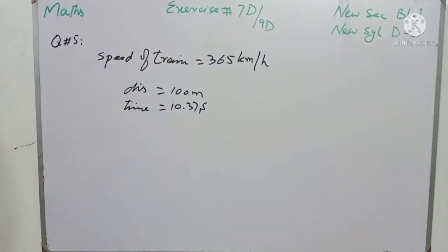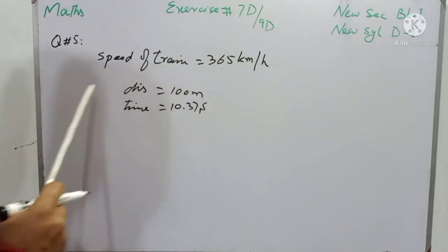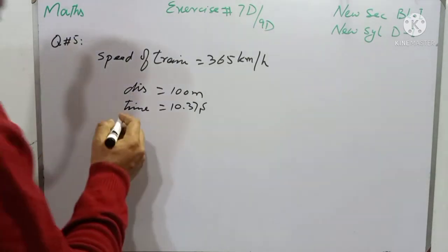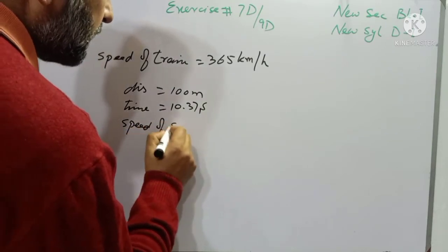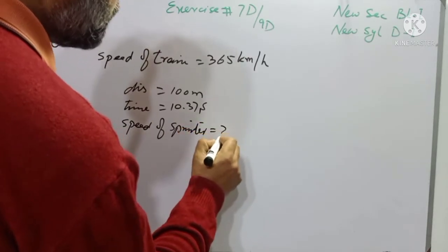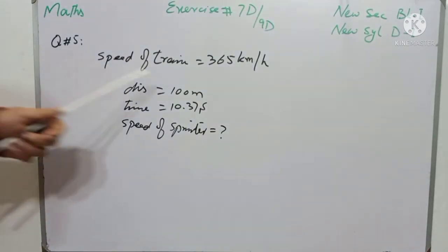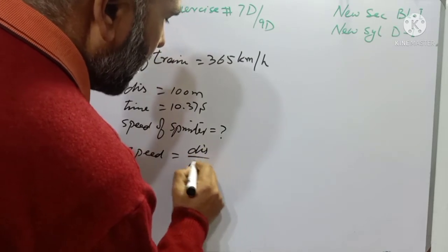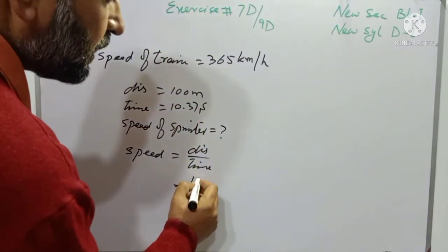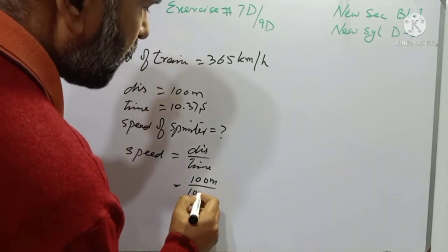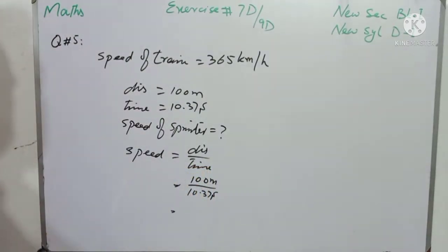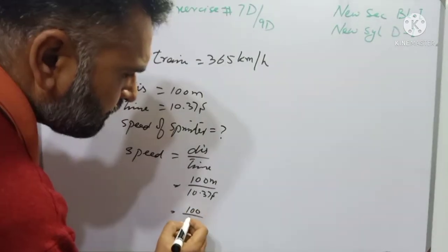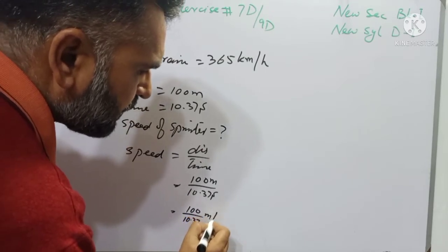We have to find how many times the train is faster than the player. So first we will find the average speed of the sprinter. We have to find the speed of the sprinter. And we know that speed is equal to distance over time. So speed equals distance over time, and distance is 100 m and time is 10.37 seconds. The average speed of the sprinter will be 100 over 10.37 m per second.